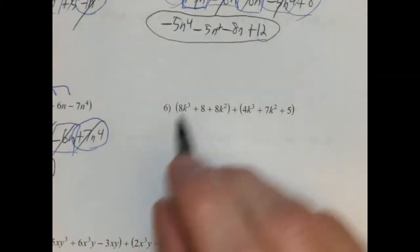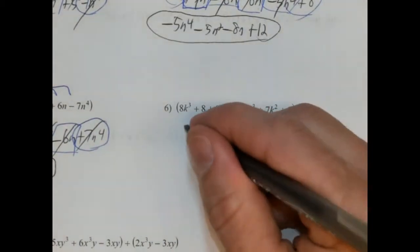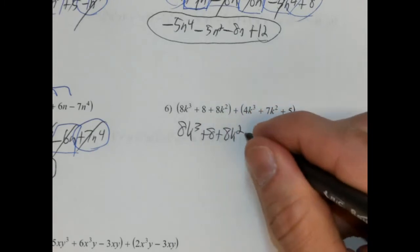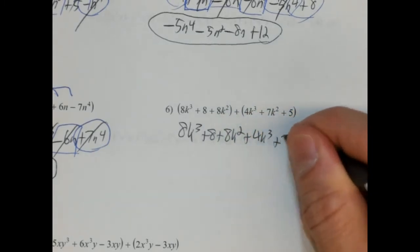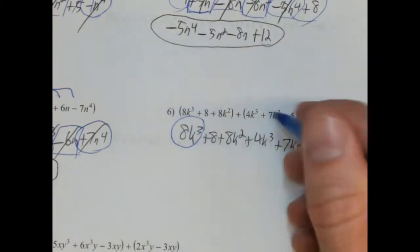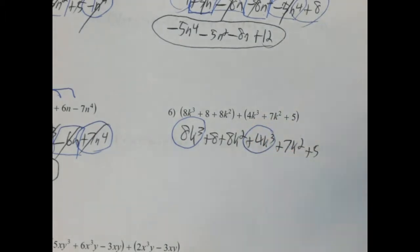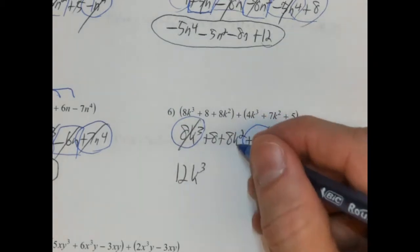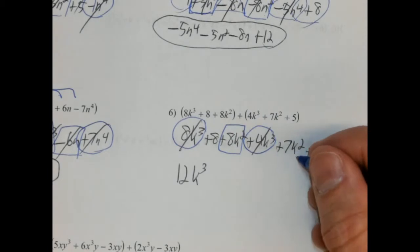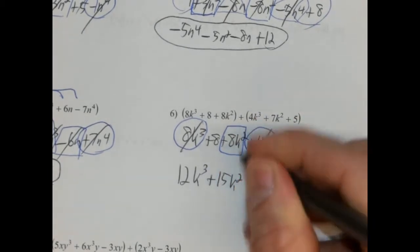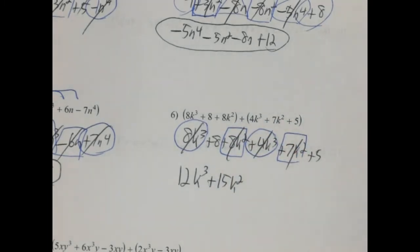Number 6. We have no negative signs, so we don't have to distribute anything. So we're just going to rewrite this: 8k cubed plus 8 plus 8k squared plus 4k cubed plus 7k squared plus 5. So we'll start with the highest exponent: 8k cubed and 4k cubed, so 8 plus 4 is 12k cubed. We have 8k squared and 7k squared, so 8 plus 7 is 15k squared. And we have 8 and 5, so that would be positive 13. And that's it.